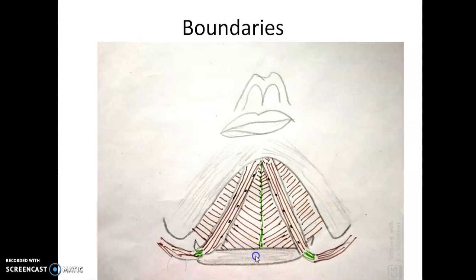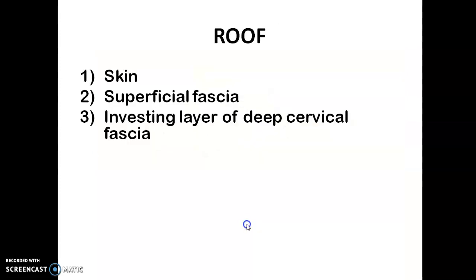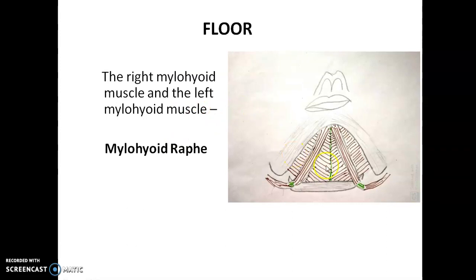The boundaries of the submental triangle: the base is formed by the body of the hyoid bone, and on either side are the anterior bellies of the digastric muscle. The apex points towards the chin or the symphysis menti. The roof is formed by skin, superficial fascia, and the investing layer of deep cervical fascia — this is the roof of any part of the anterior triangle. The floor is mainly formed by the mylohyoid muscles of both sides, left and right, joining in the midline at the mylohyoid raphe, which entirely forms the floor of this triangle.